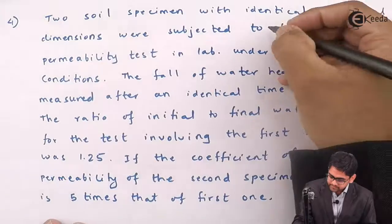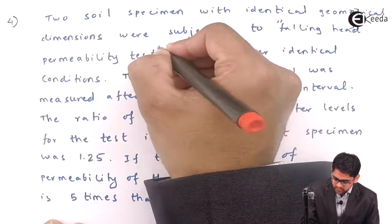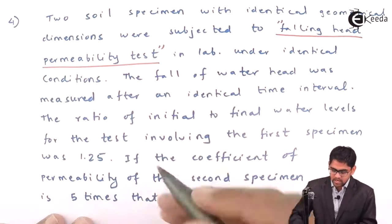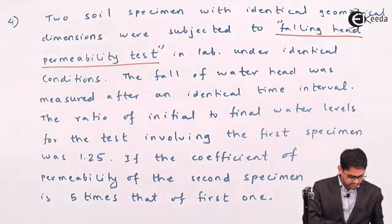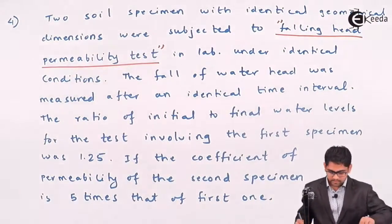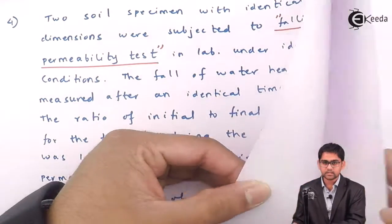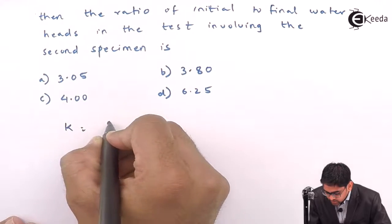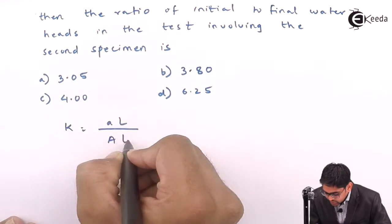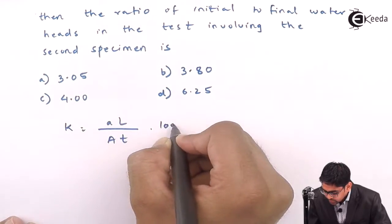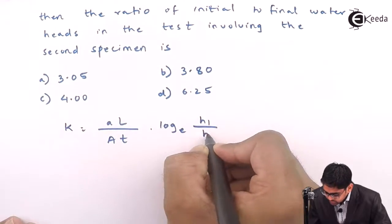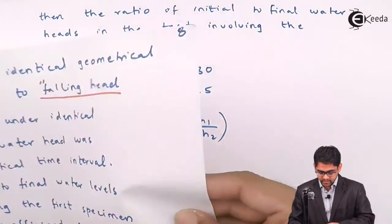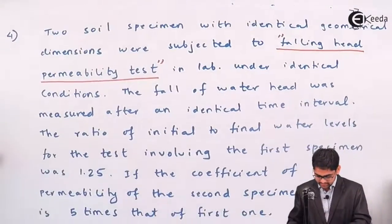This problem is related to the falling head permeability test. The formula for this test is: k equals (a·l) divided by (A·t) multiplied by ln(h1/h2). That is how you calculate the coefficient of permeability of soil using the falling head test.